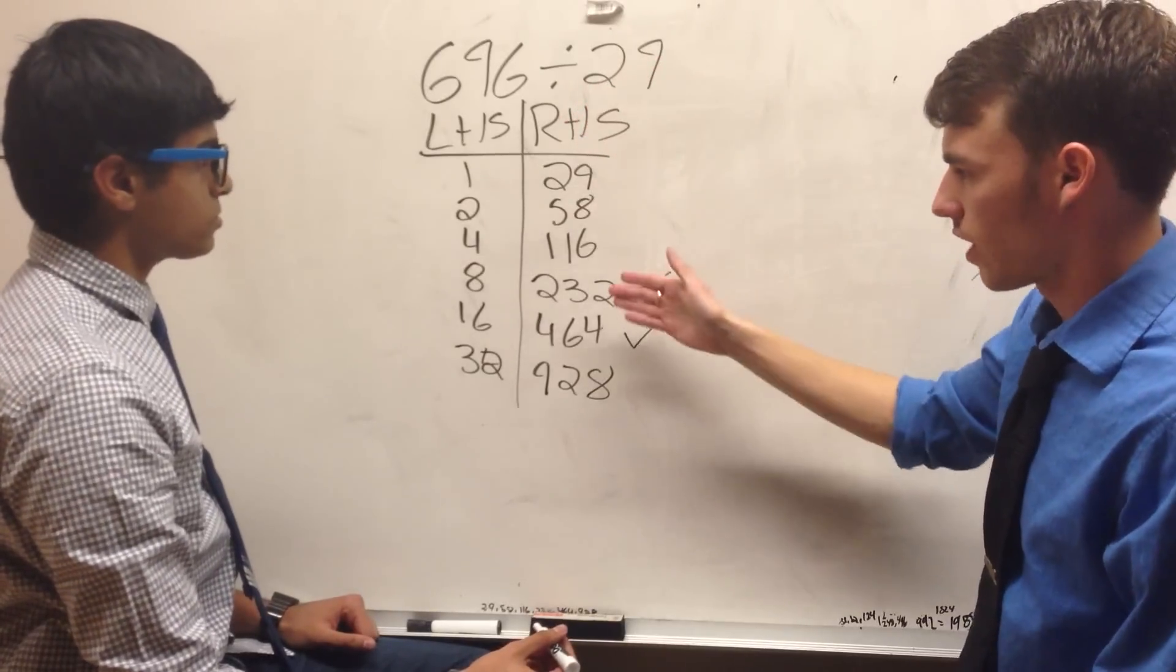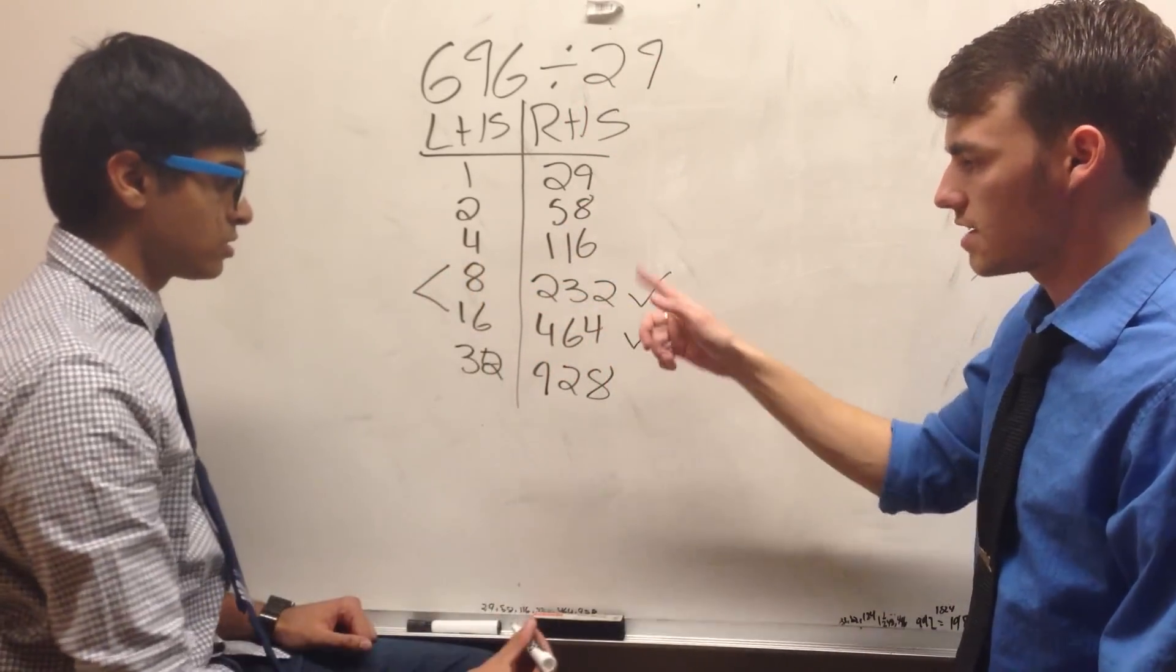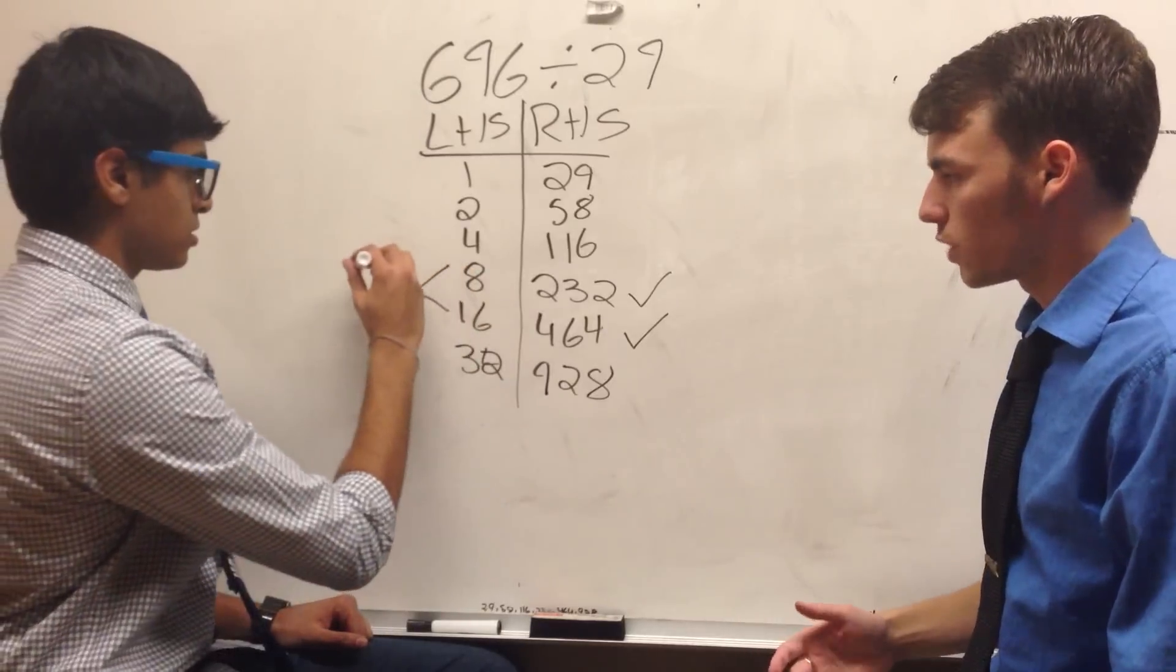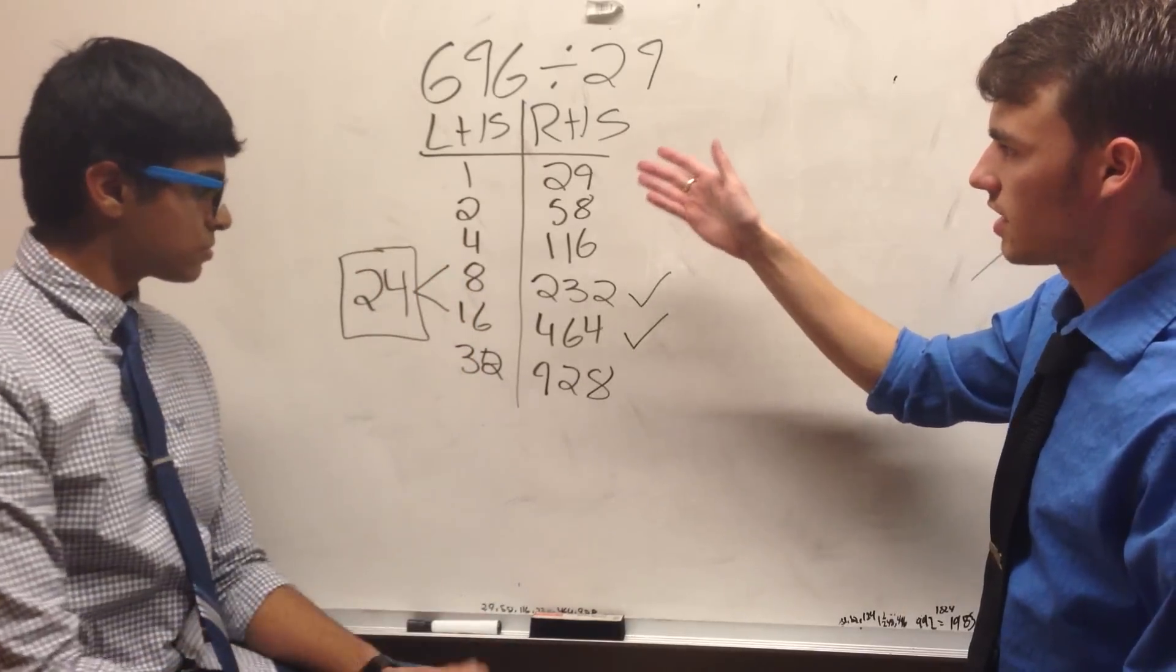So we hop over to the left-hand side and take the corresponding numbers on that column, 8 and 16, add them together, and we get 24, which is the answer that we get when we divide 696 by 29.